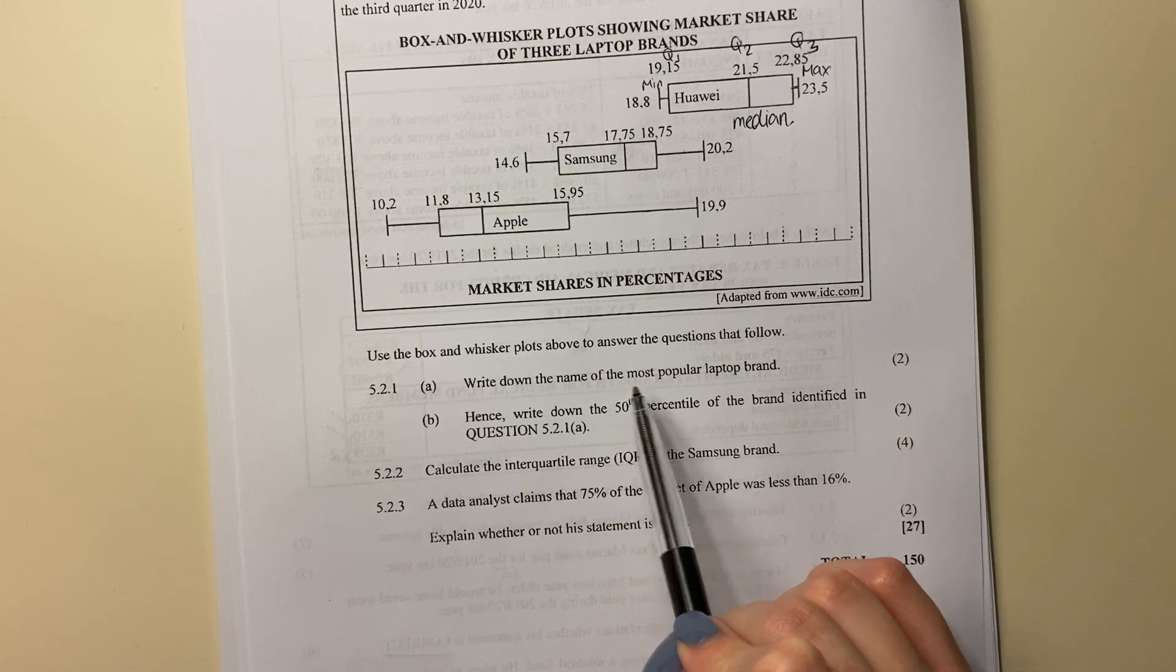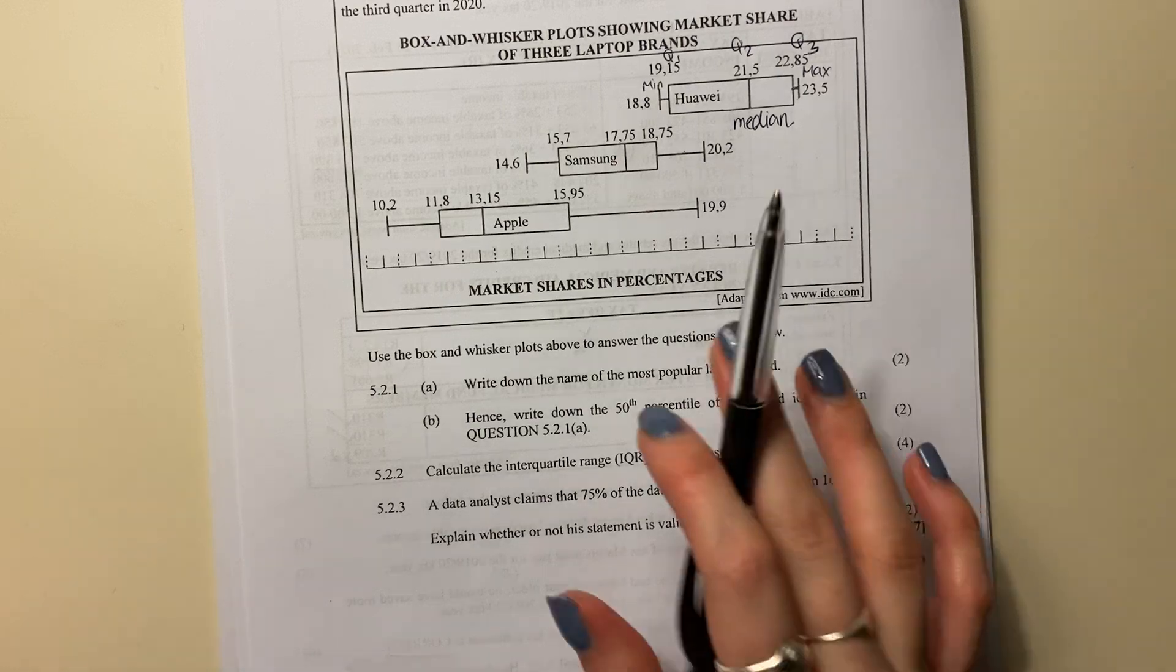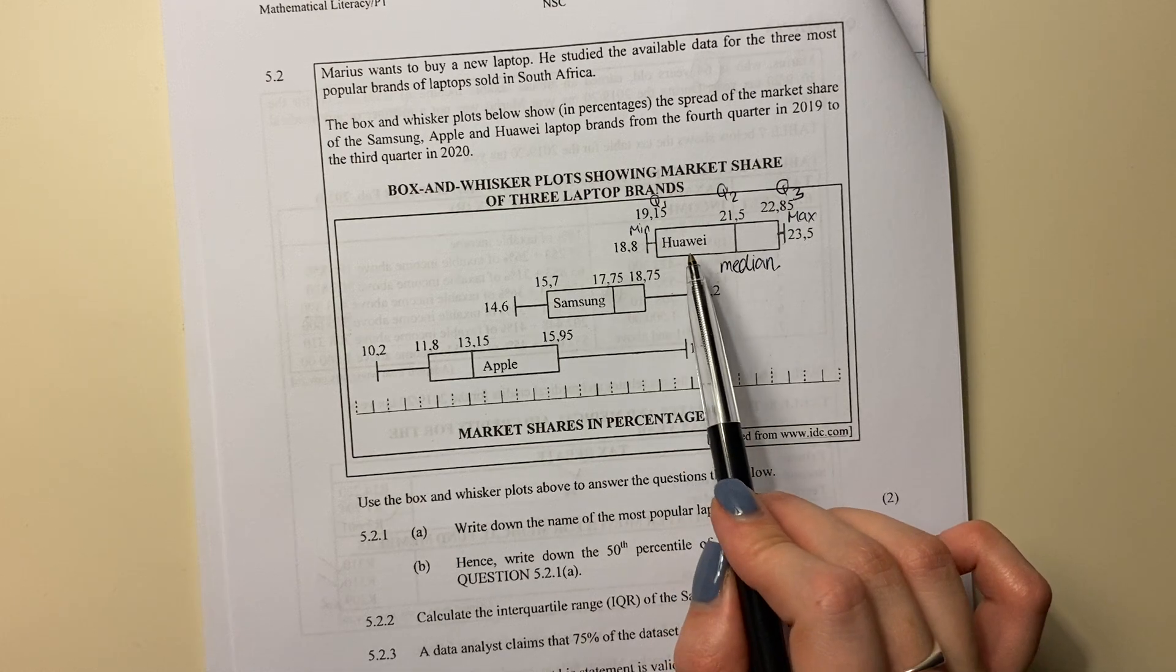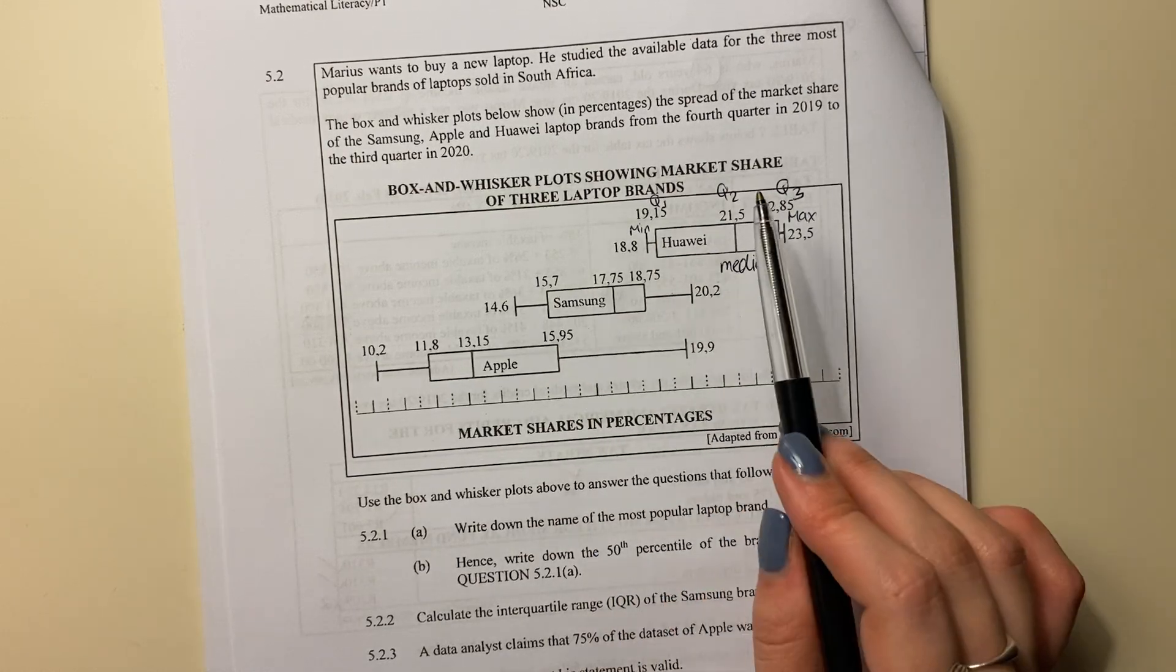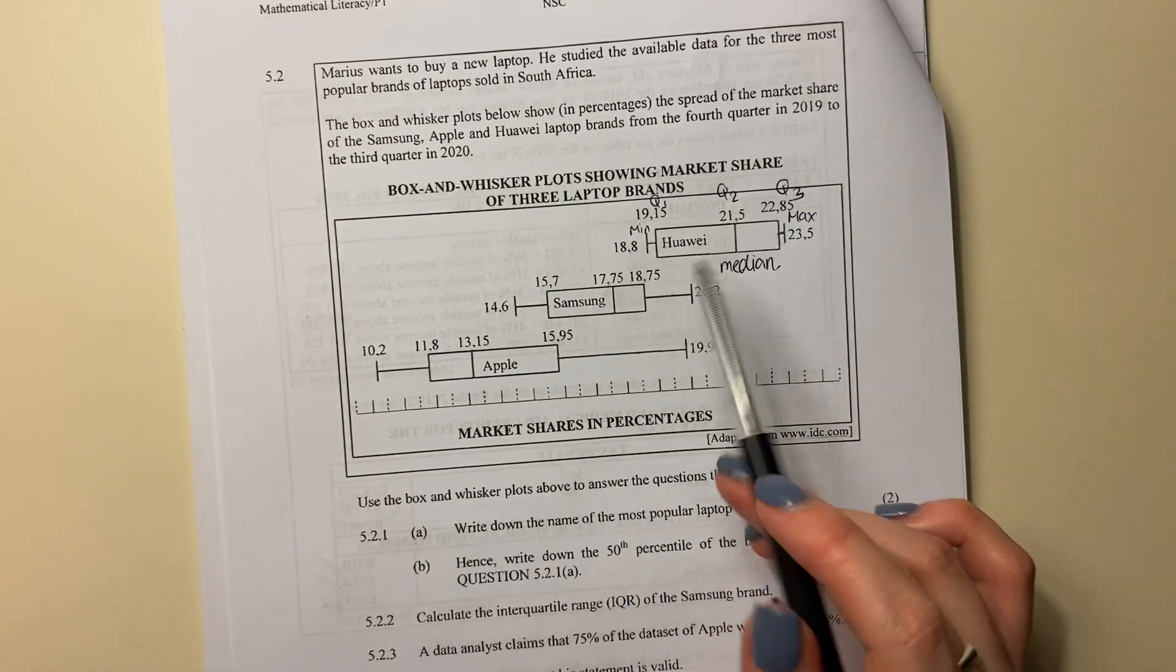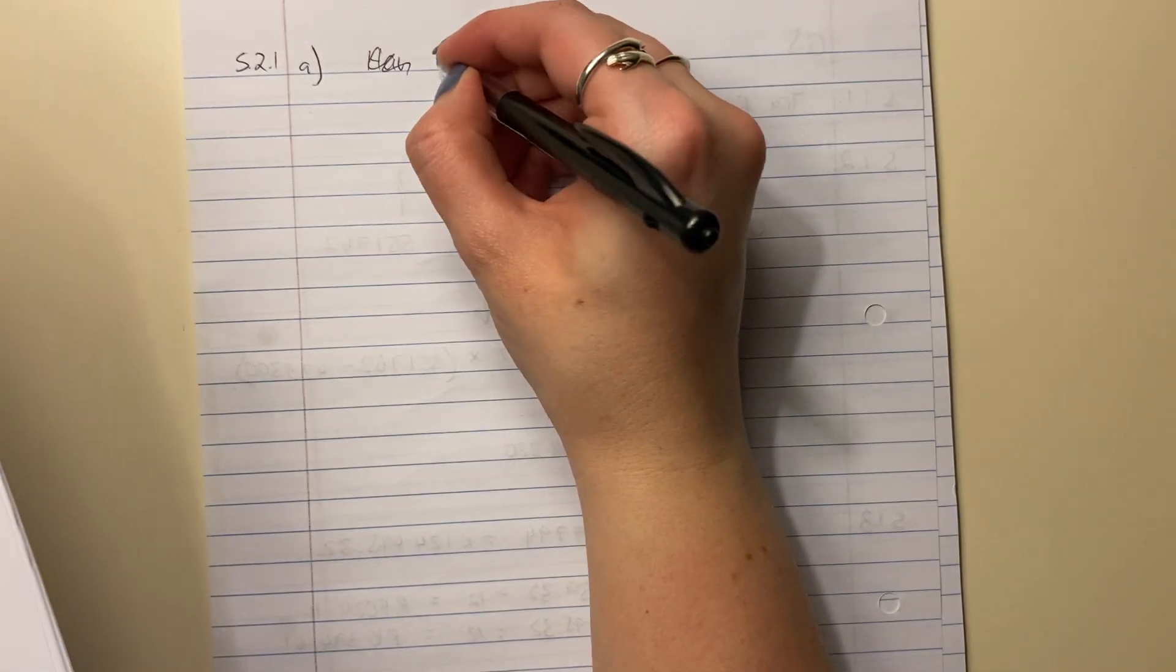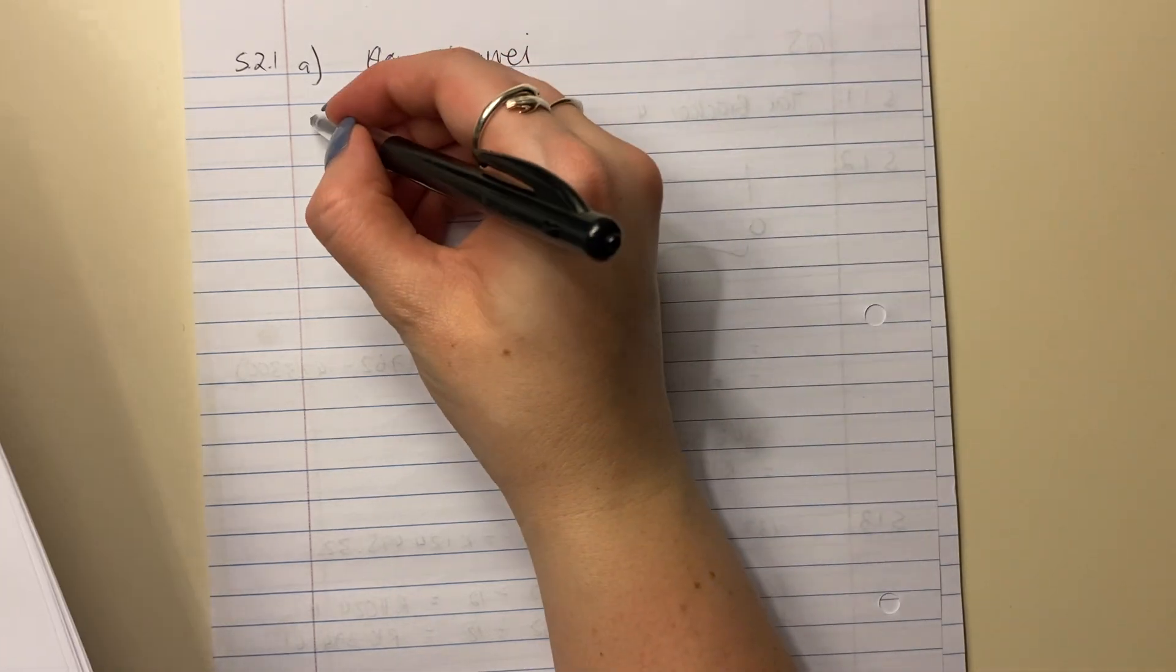Write down the name of the most popular laptop brand. You wouldn't have thought that was a difficult thing to say. It's saying which is the one with the highest market share. Well, you should see from this that it's Huawei. That's what they're wanting you to see. Now it's a more complex box and whisker than we generally see, but it's the last question of the paper, so you should be thinking you have a little bit of a challenge. So it is going to be... oh yeah, I spelled that wrong. Huawei. Just seems like there's too many vowels in there.